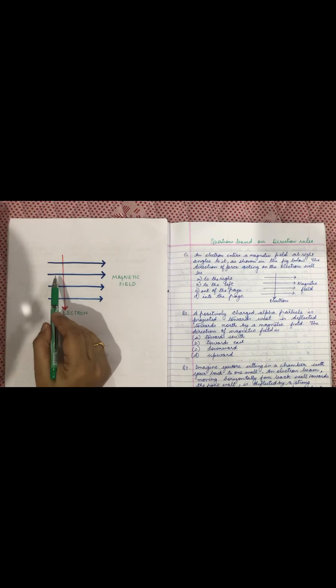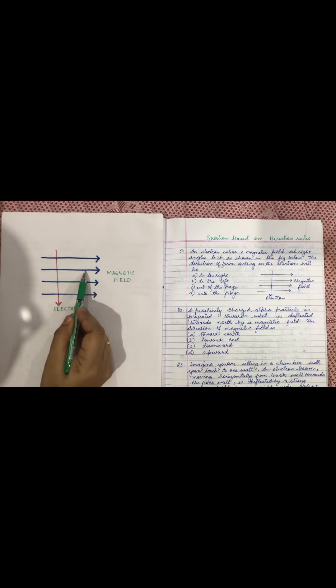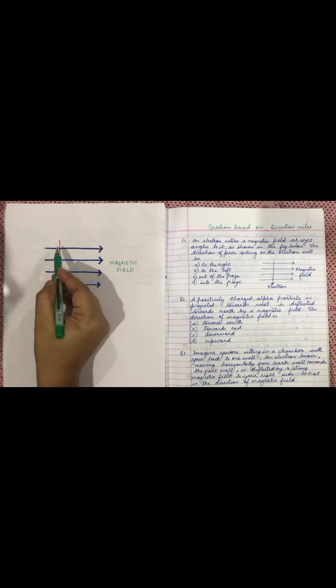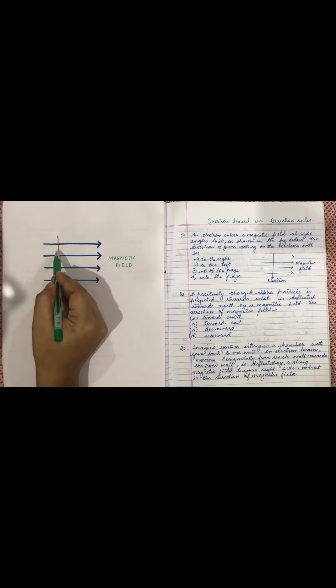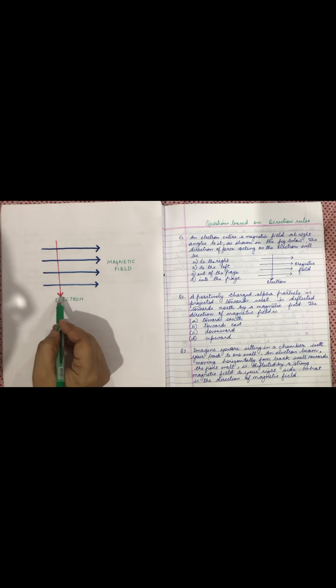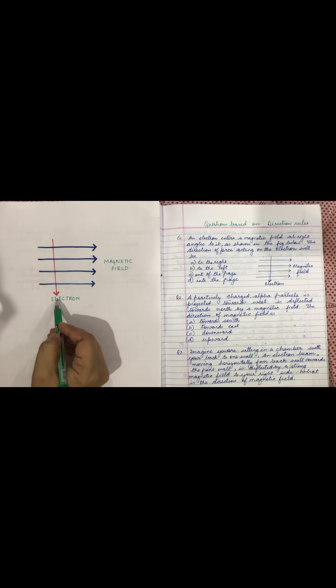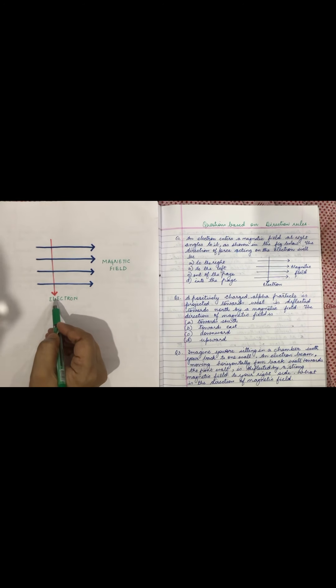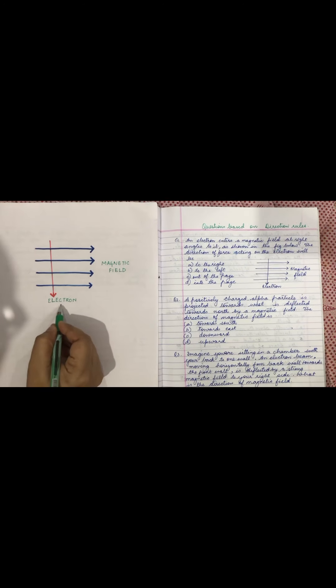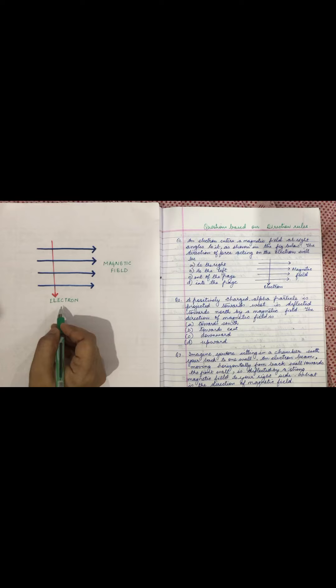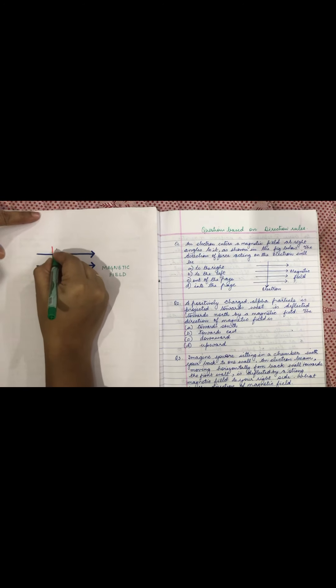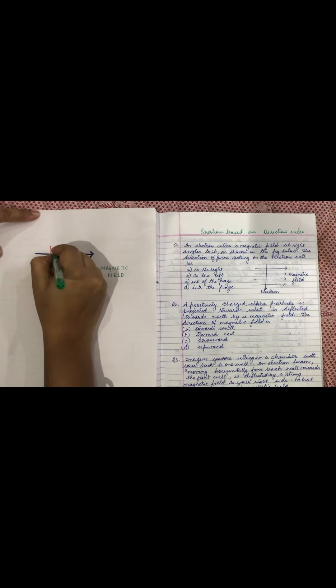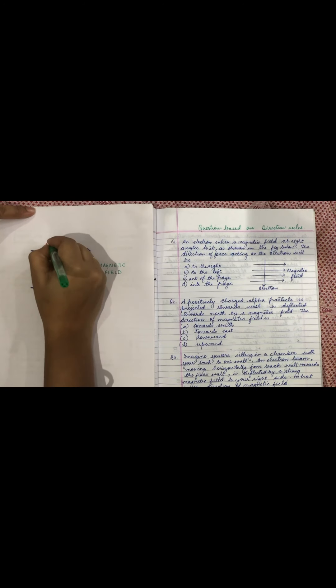In the first question, the direction of magnetic field is given and this is the direction of electrons at right angles to it. So when the electron is moving in this direction, we know that by convention the current will flow in the opposite direction. So this will be the direction of current.